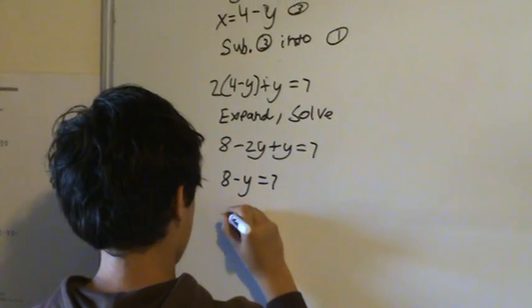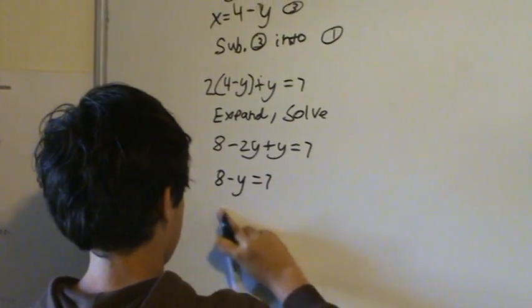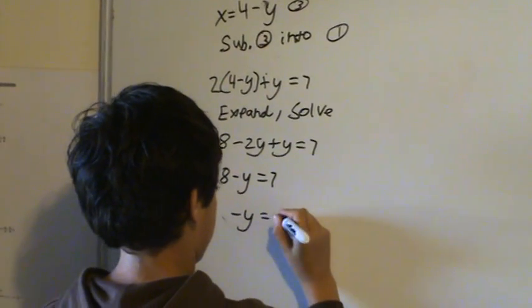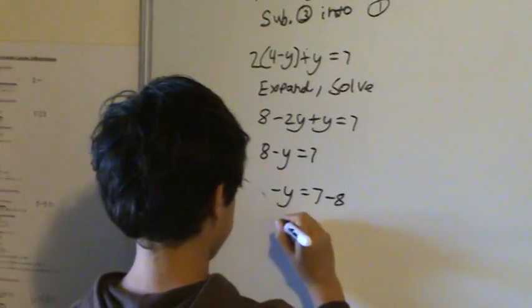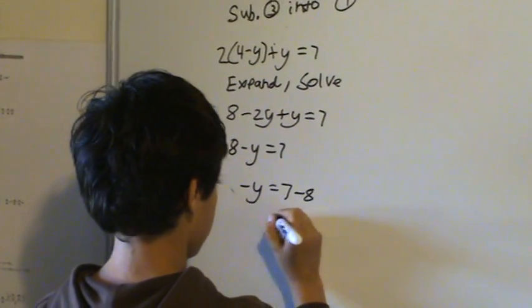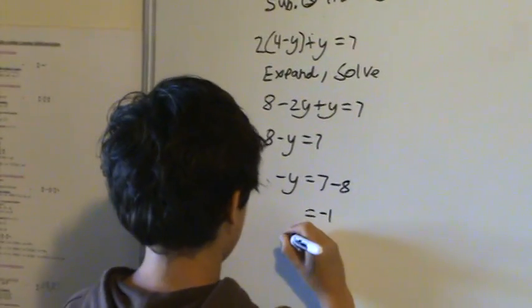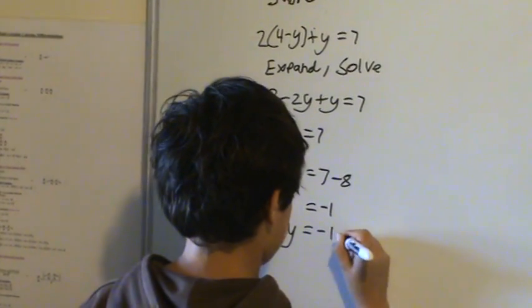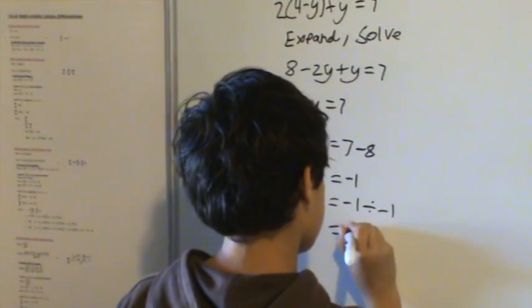And when you cross positive 8 over to that side, it becomes a negative. And that is negative 1. And when you cross a multiplication over, it becomes a division. And that is 1.